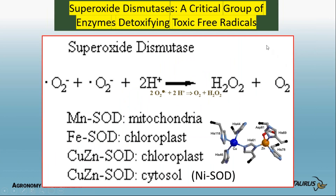Now here's the important one — superoxide dismutase. If you've got these three radicals and you react them, you get hydrogen peroxide and oxygen. The key nutrients are: manganese superoxide dismutase, which helps break down free radicals in the mitochondria; iron superoxide dismutase in the chloroplast; and copper-zinc superoxide dismutase in the chloroplast and also in the cytosol — the liquid within the cell. These transition metals have tremendous valence capability to change and therefore help with that electron issue. In the copper-zinc SOD, zinc doesn't change valence — it's the copper that changes valence — but the copper won't work without the zinc.